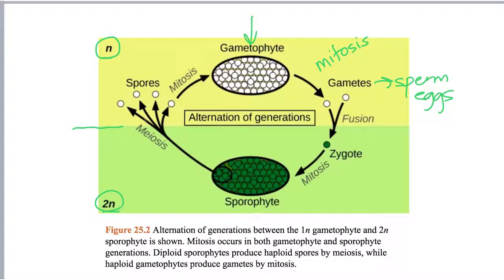Mitosis produces haploid gametes — sperm cells and egg cells. Two of those gametes fuse, resulting in a zygote, which is the single-celled first step in the diploid sporophyte phase. Now we're in the green box, talking about diploid tissue. The diploid zygote grows through mitosis — cell division producing cells with an identical chromosome number to the parent cell — into the adult sporophyte.